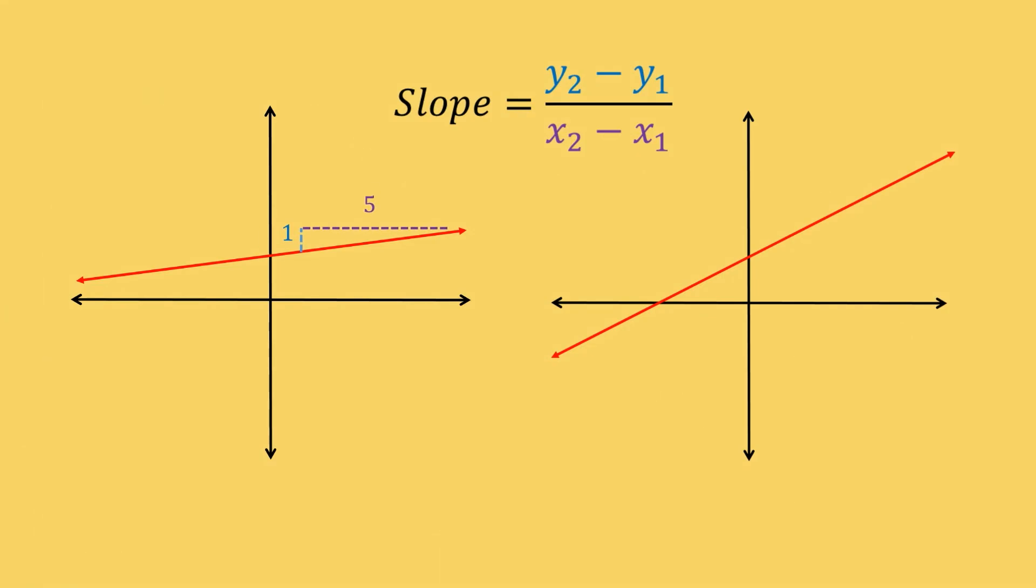This comes from measuring the rise of the function in the y direction versus the run of the function in the x direction. With slope we can say how much it is increasing or decreasing by simply giving this ratio of numbers. So we can say that the line on the right is increasing more simply because it has a larger value for its slope.